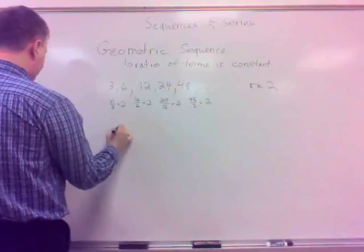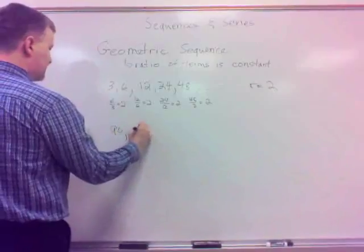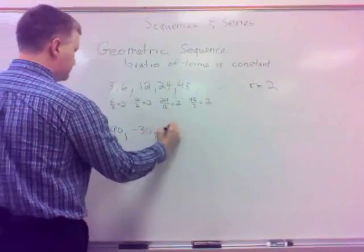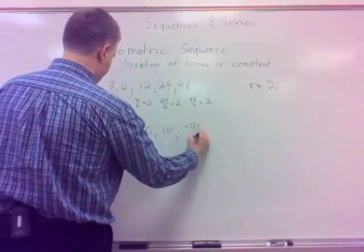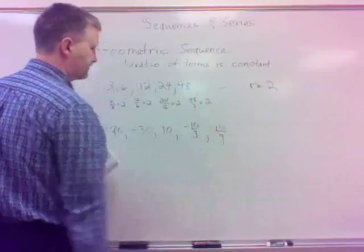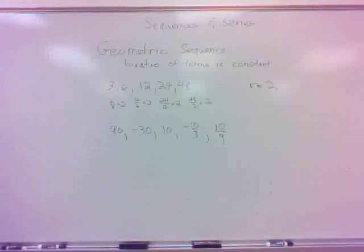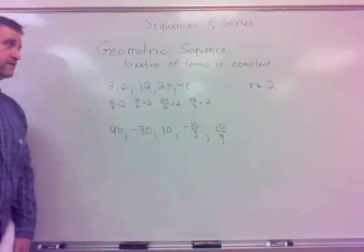Now, what can happen? Here's a couple of things on this one: 90, negative 30, 10, negative 10 thirds, 10 ninths. This too is a geometric sequence. So one note here is note the alternating terms. You can have alternating signs in a geometric sequence.